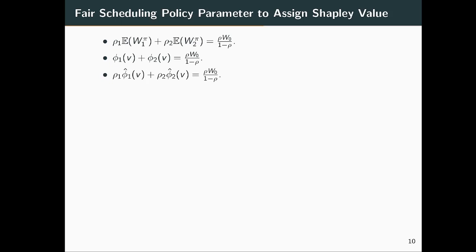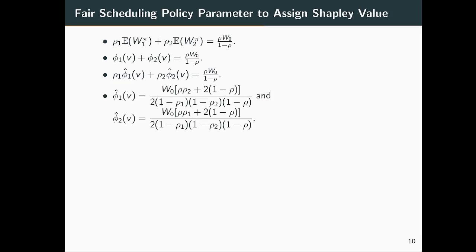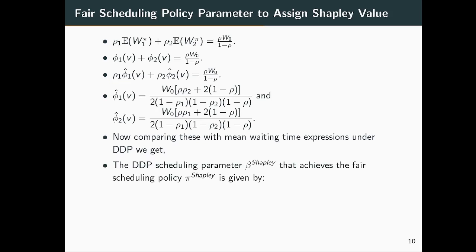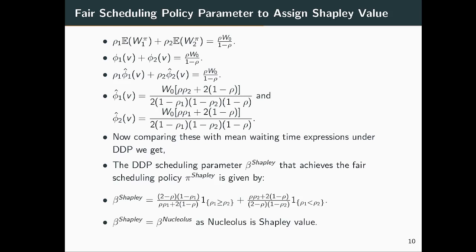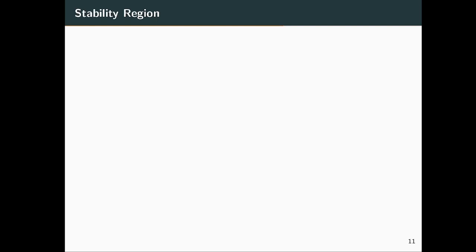By comparing the expression for mean waiting time under DDP with the Shapley value allocations, we obtain the fair scheduling policy parameter beta_Shapley. This is the parameter that achieves the fair scheduling policy pi_Shapley. The left expression is activated when rho_1 > rho_2 and the right expression when rho_2 > rho_1. Since the nucleolus equals the Shapley value, beta_nucleolus equals beta_Shapley.